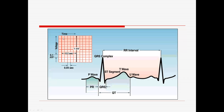On the EKG paper, you have bold red lines, and between each pair of bold red lines are five small boxes. Each small box represents 0.04 seconds, so the time between one bold red line and the next is 0.2 seconds. We use these measurements to determine whether the PR interval or QRS is too long, and to identify what's going on if there's a cardiac problem. Voltage is measured vertically — each box going up is 0.1 millivolts.